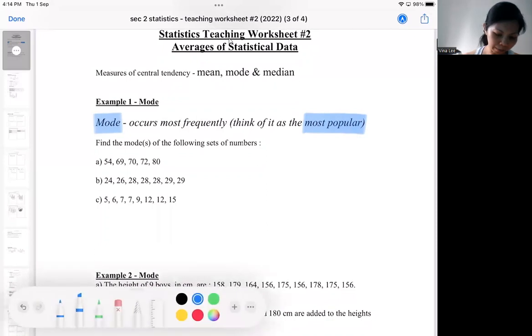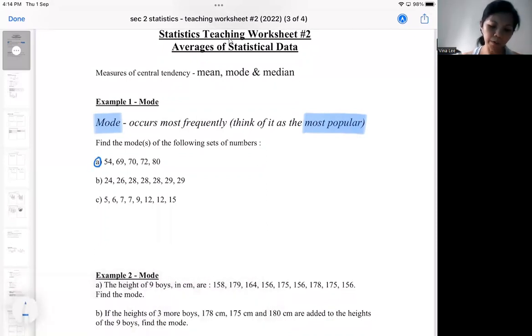If you look at the data set A: 54, 69, 70, 72 and 80. Actually, we couldn't tell which one is the most popular because each of them appear once only. In this case, we couldn't tell if there's any popular numbers or not. In such a case, we don't have any mode. We got no sense of popular, no feel of which number is popular because every number appears once.